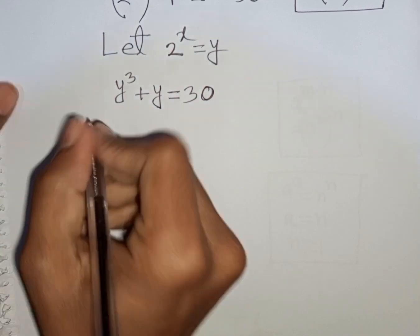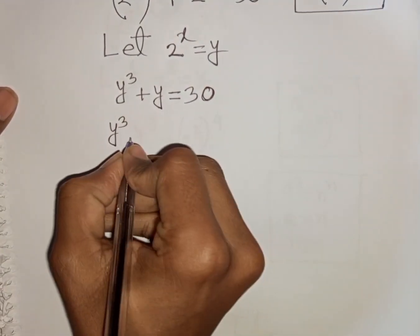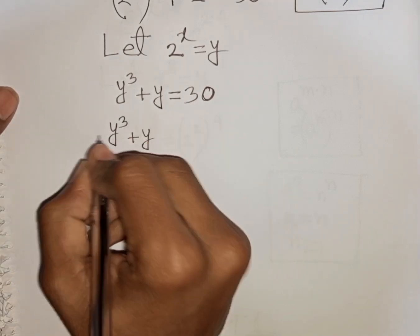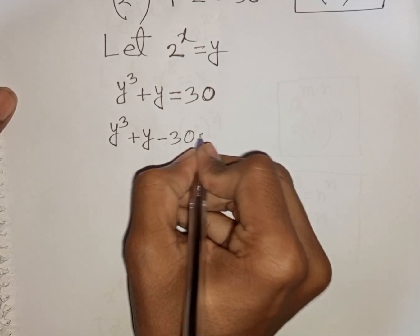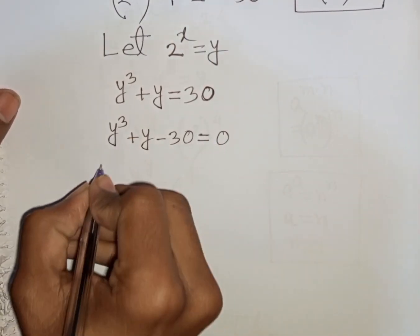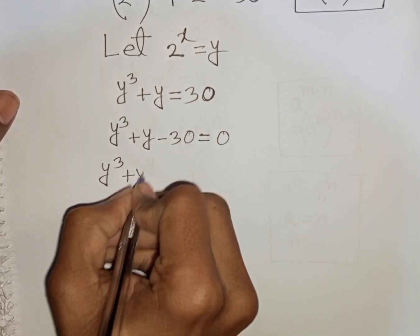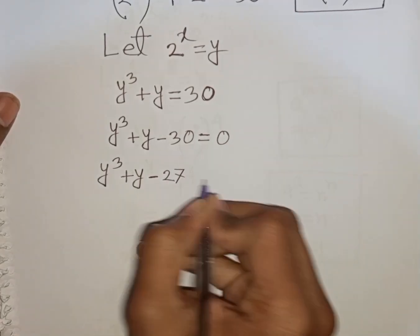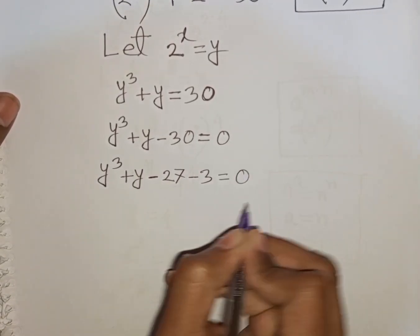Now I can write here y cube plus y, then take 30 to the left side so this will be minus 30, giving y cube plus y minus 30, which can be written as minus 27 minus 3, then is equal to 0.